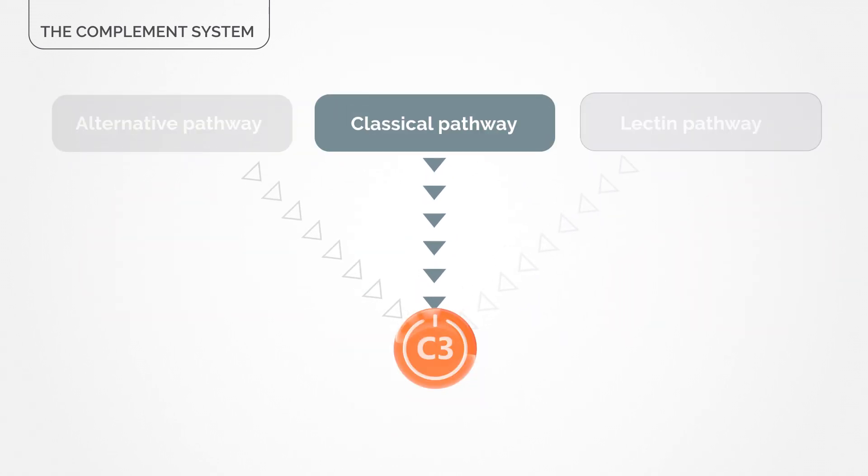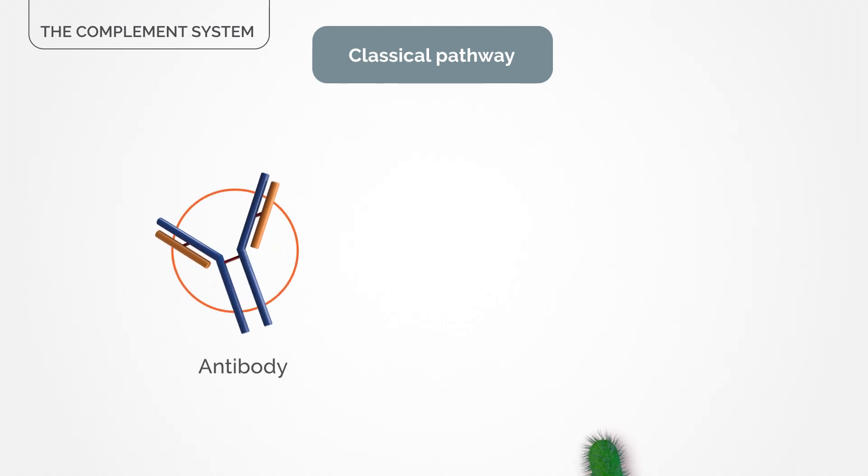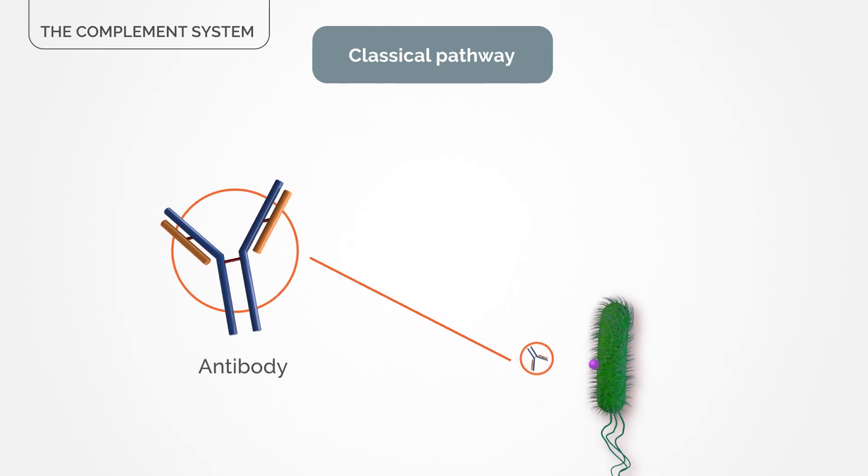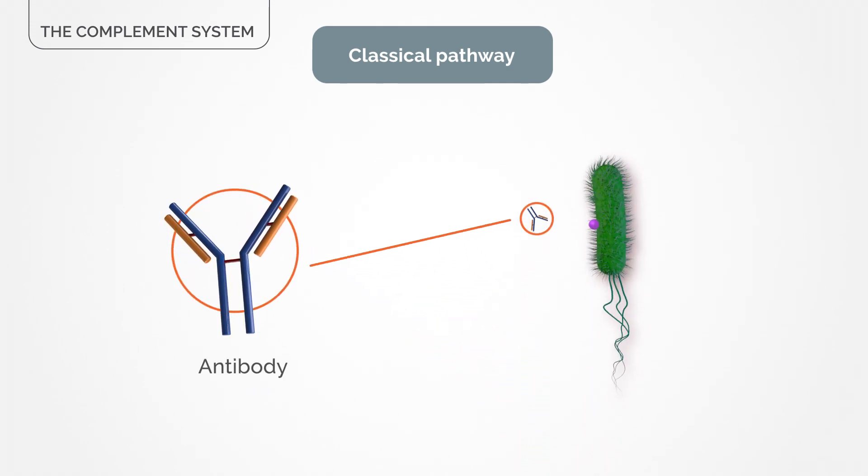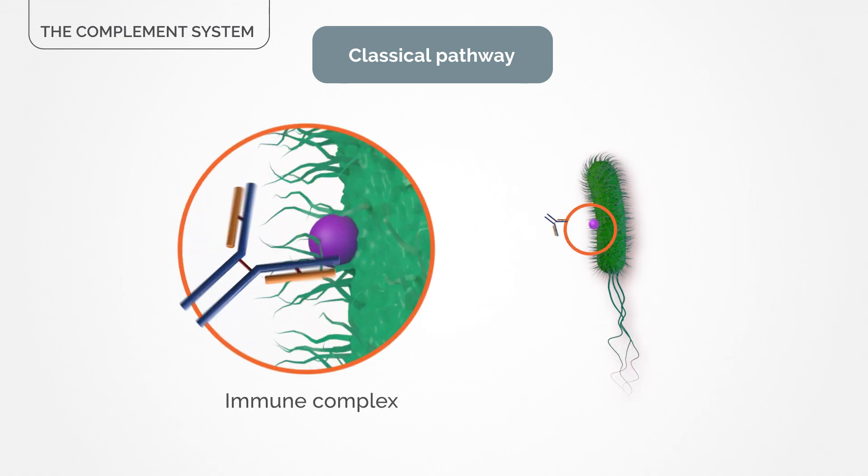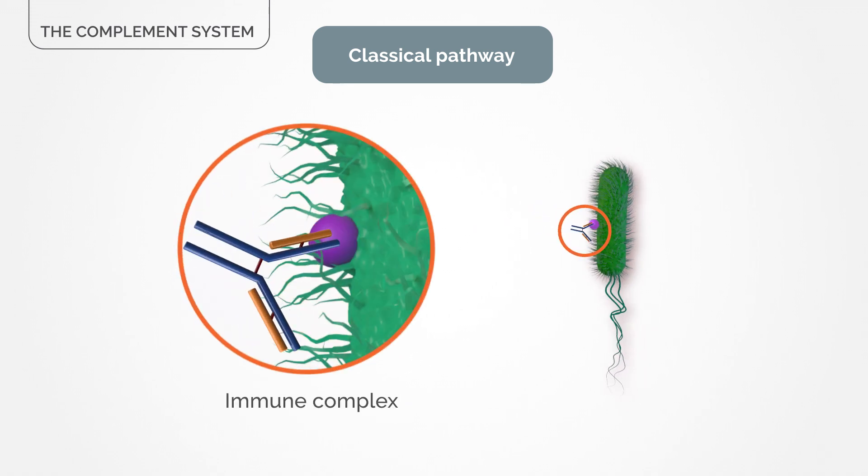The classical pathway is activated when an antibody, a protein produced by our immune system, recognizes and binds to a component on the surface of a foreign cell, forming an immune complex, starting an immune response that targets the pathogen for destruction.